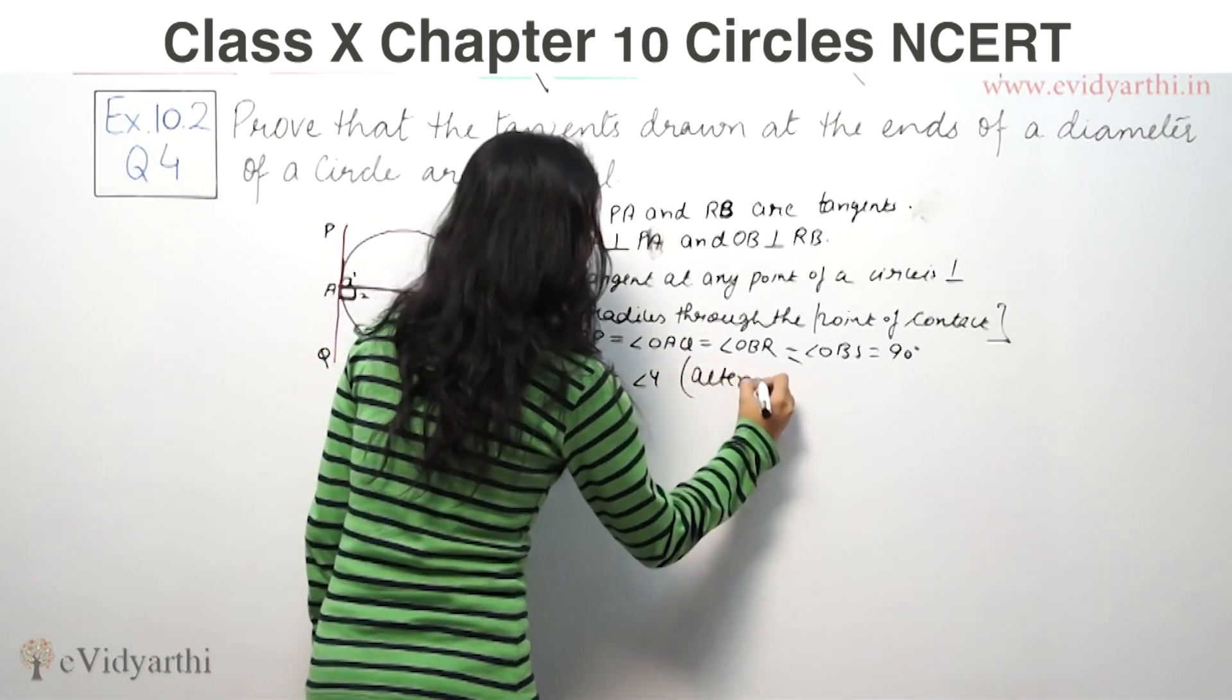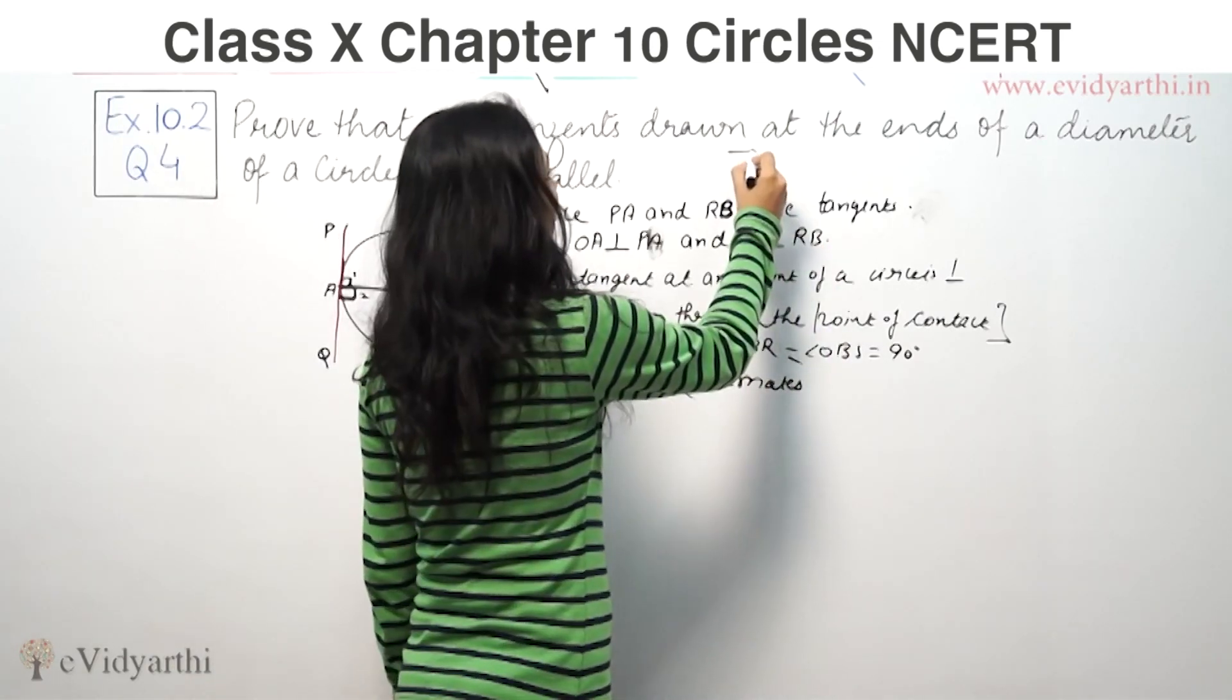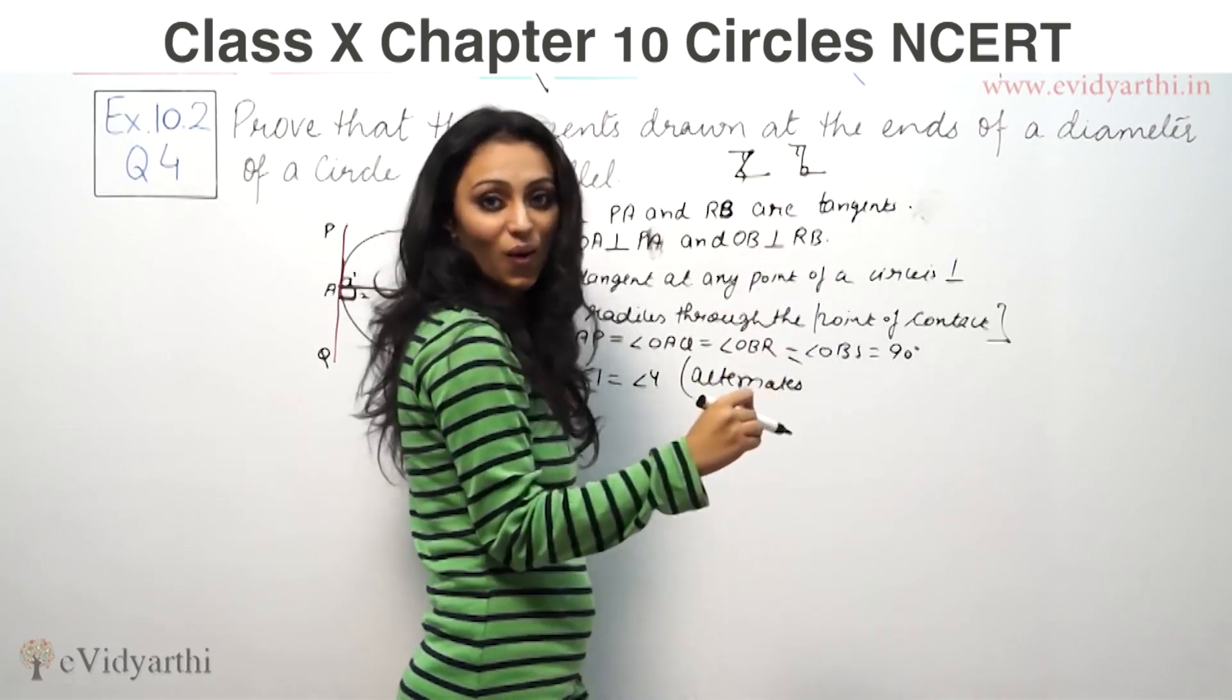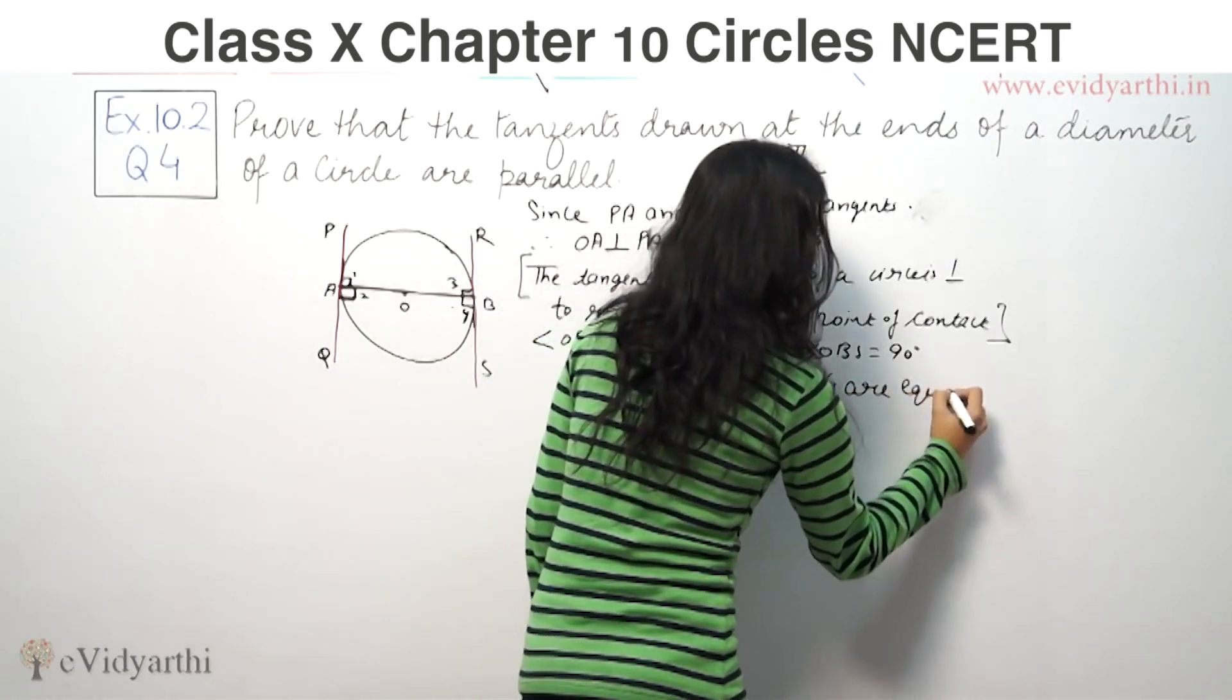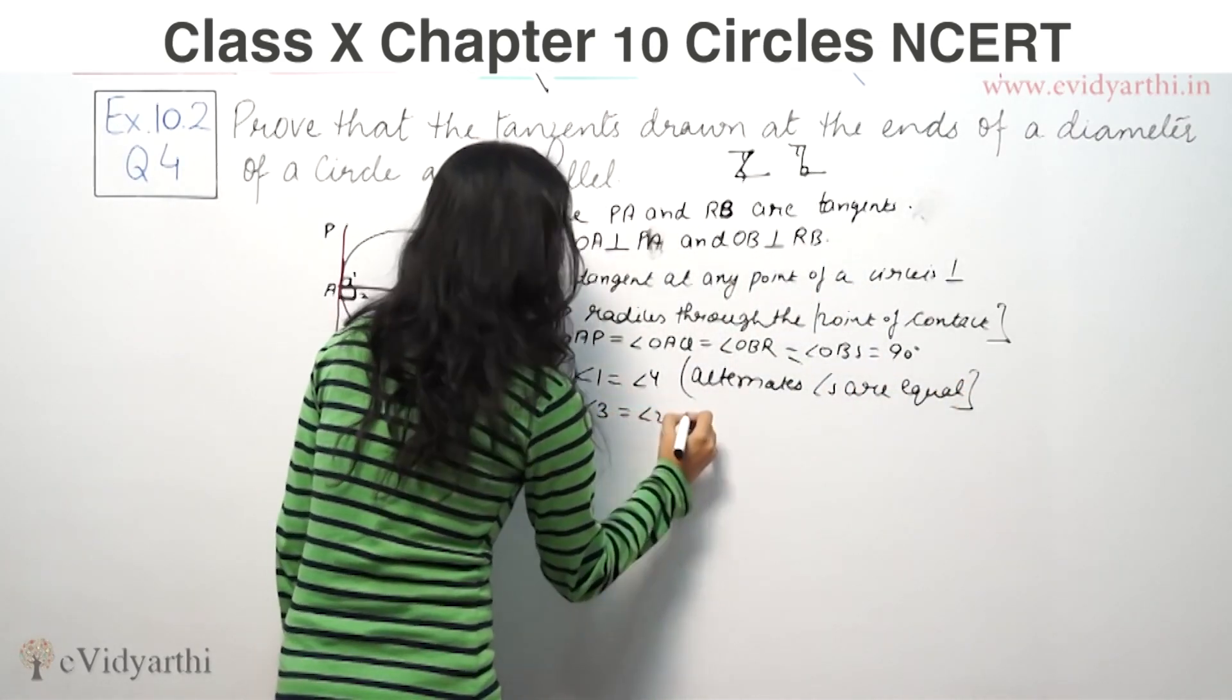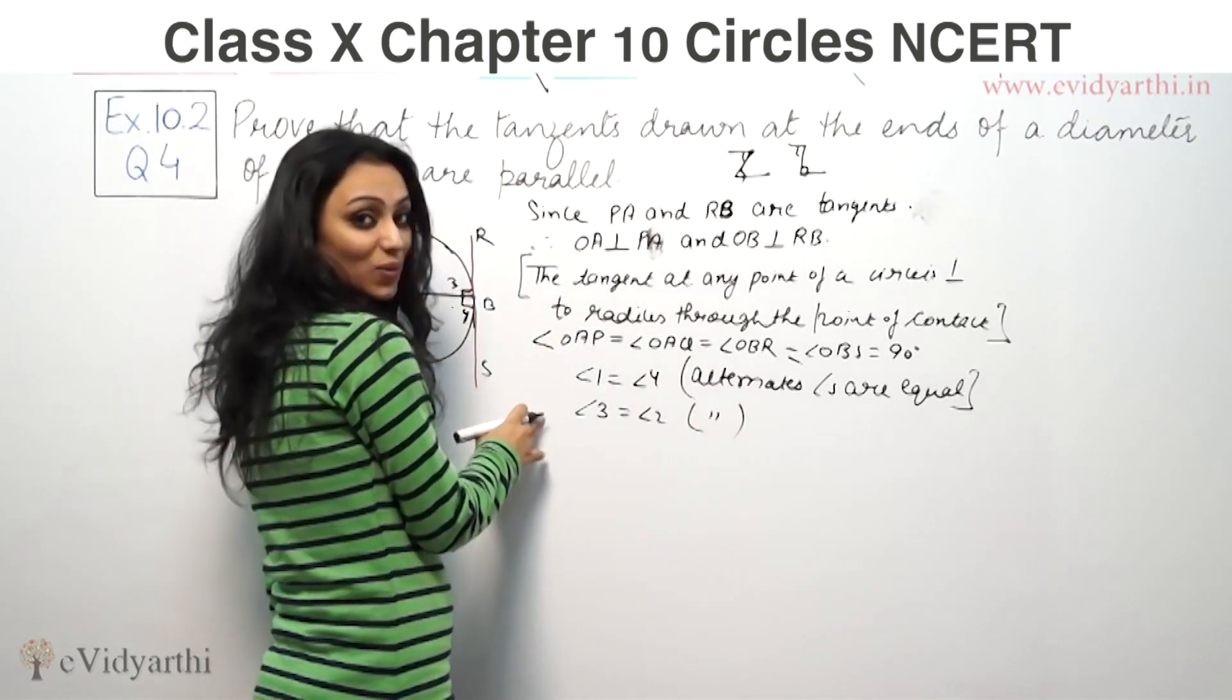Angle 3 is equal to angle 2. Same reason, alternate angles are equal. So alternate angles are equal.